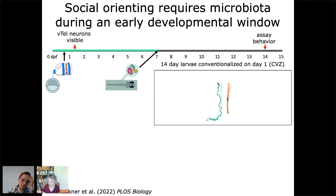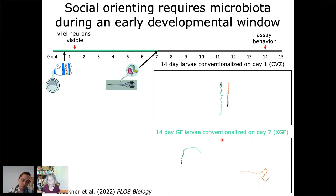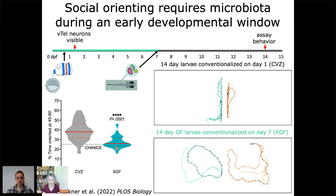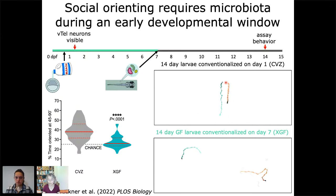In neuroscience there's a concept of critical periods: if circuits don't get wired up in the appropriate amount of time, they may miss their temporal window and be unable to form the appropriate synaptic connections. Because V-tell neurons are visible so early and behavior starts to develop during this time period, we imagined the first week of development was critical for these neurons. So we made animals germ-free, kept them germ-free for that first week, then inoculated them with the normal microbiome and tested behavior at 14 days — these are now ex-germ-free animals. These animals behave completely differently: they have very little interest in social interactions, confirming the critical period hypothesis.